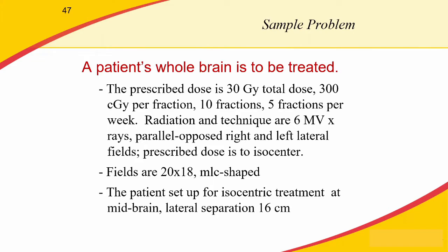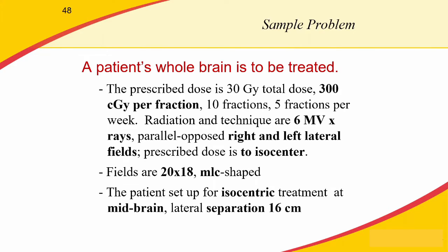The field shape is 20 by 18 cm. The patient is set up isocentrically with a lateral separation of 16 cm. Key parameters: 300 centigrade per fraction, 6MV beam, parallel opposed right and left lateral fields — so two treatment fields — prescribed to isocenter with 20 by 18 rectangular fields. The patient is set up isocentrically.